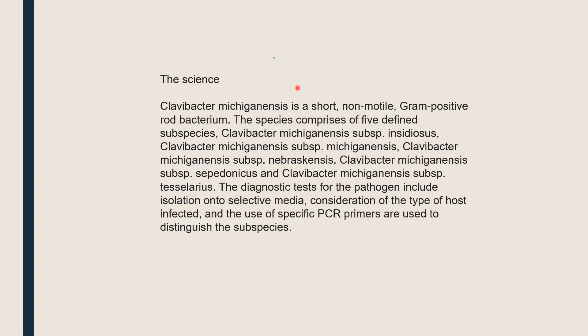The pathogen is a short, non-motile, gram-positive rod bacteria. This species comprises five defined subspecies of Clavibacter michiganensis. The diagnostic test for the pathogen includes isolation on selective media, consideration of the type of host infected, and the use of specific PCR parameters to distinguish the subspecies.